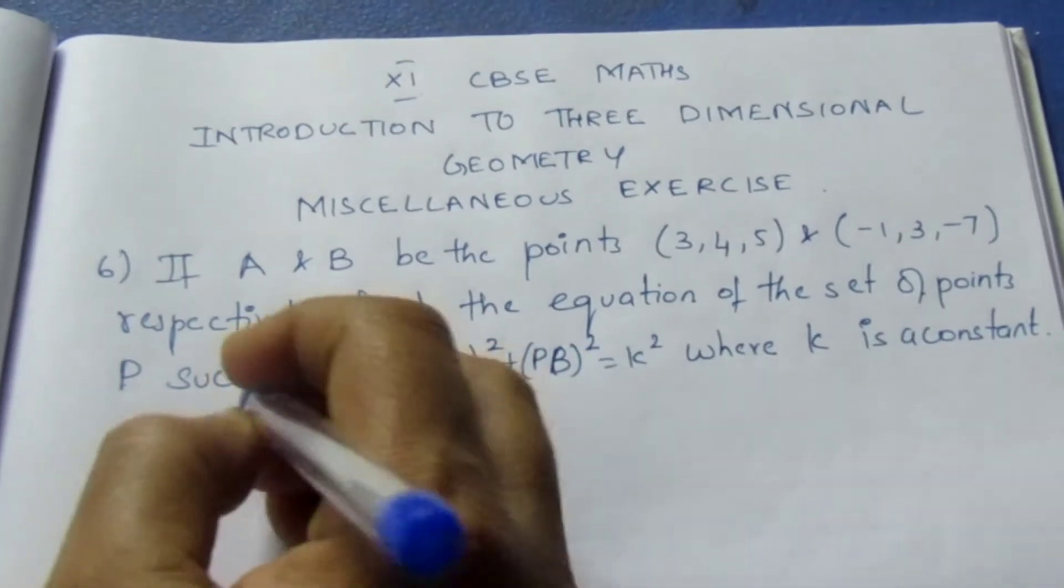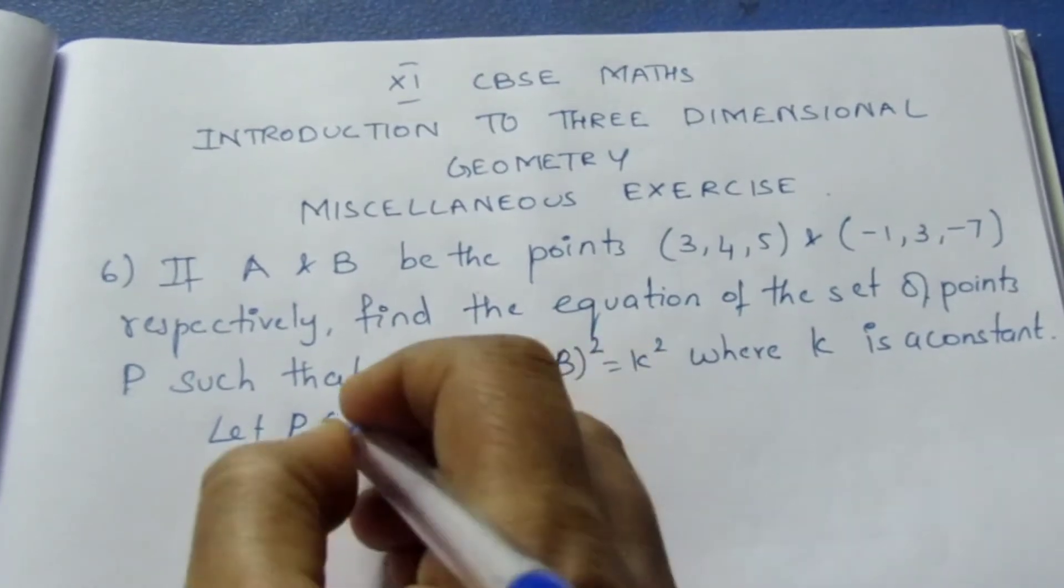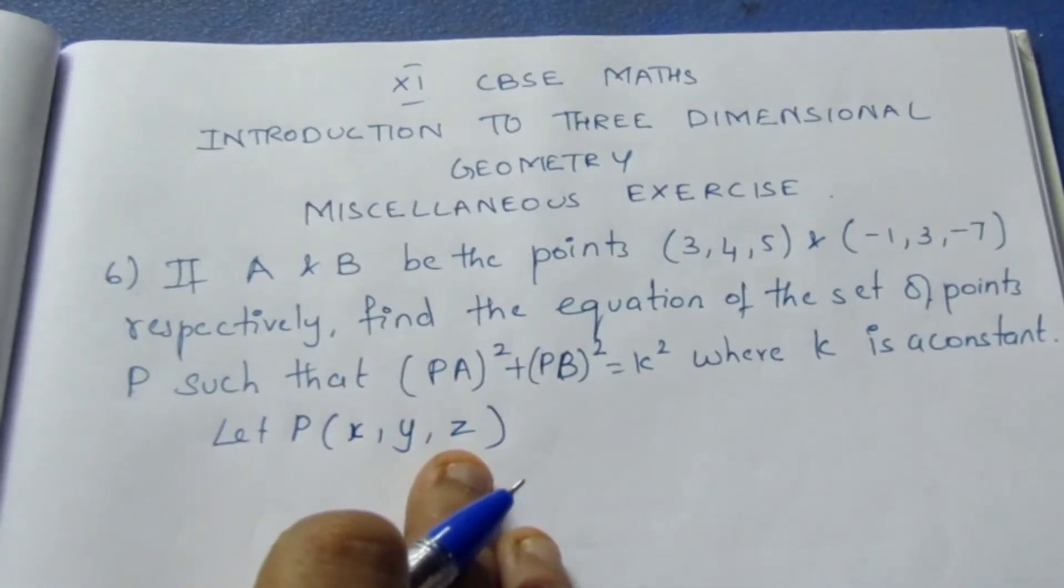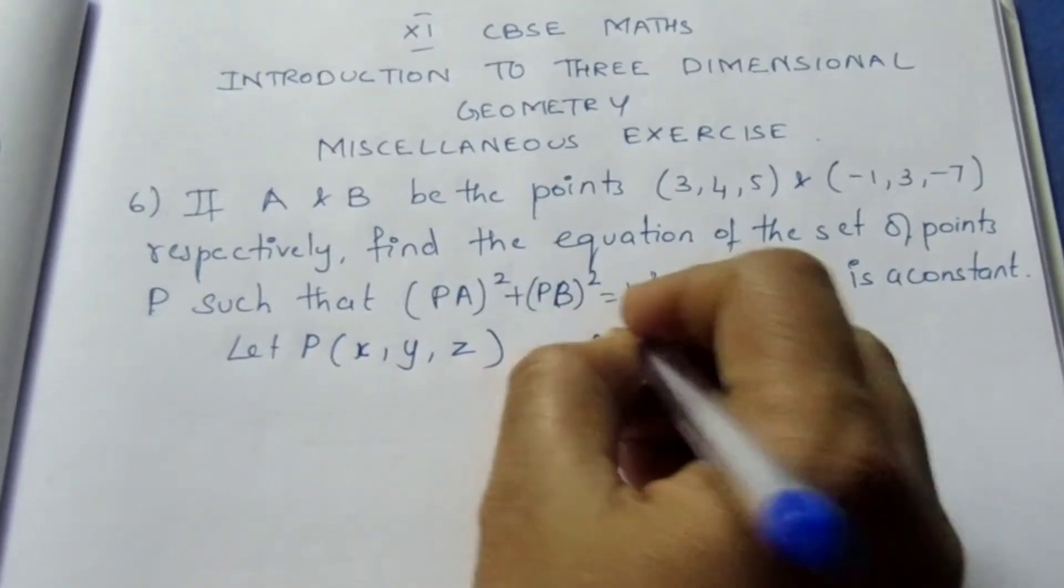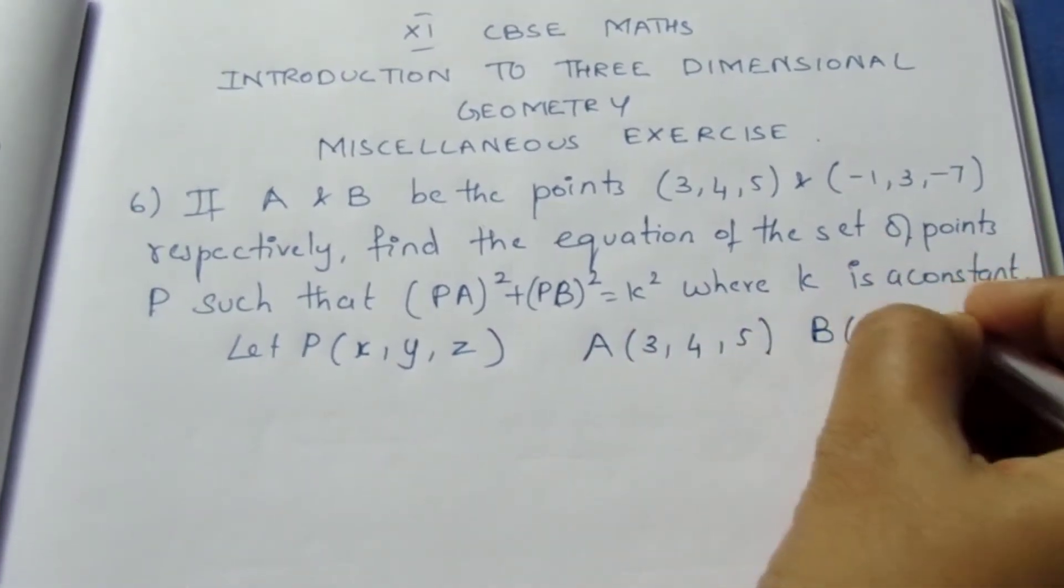Let P be (X, Y, Z). A is the point (3, 4, 5). B is the point (-1, 3, -7).